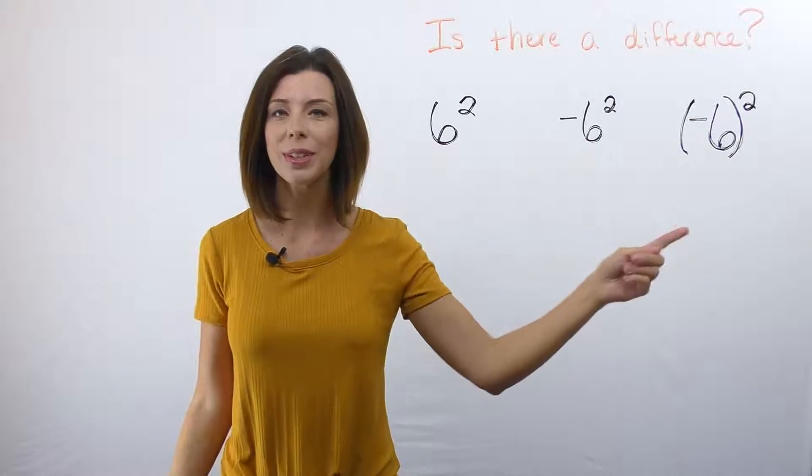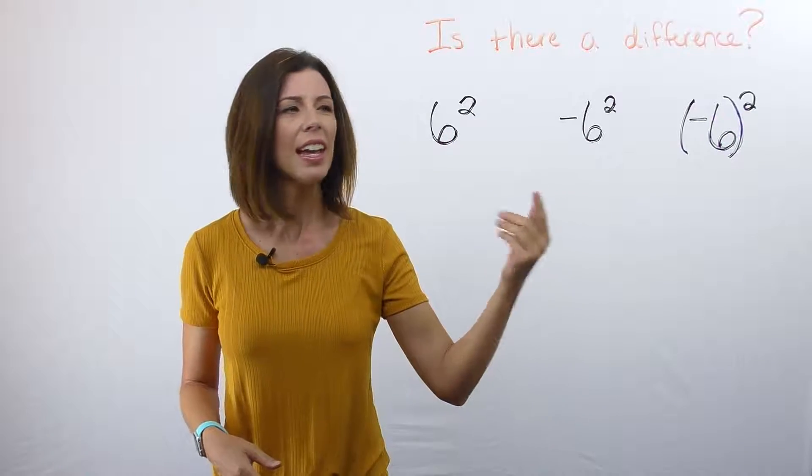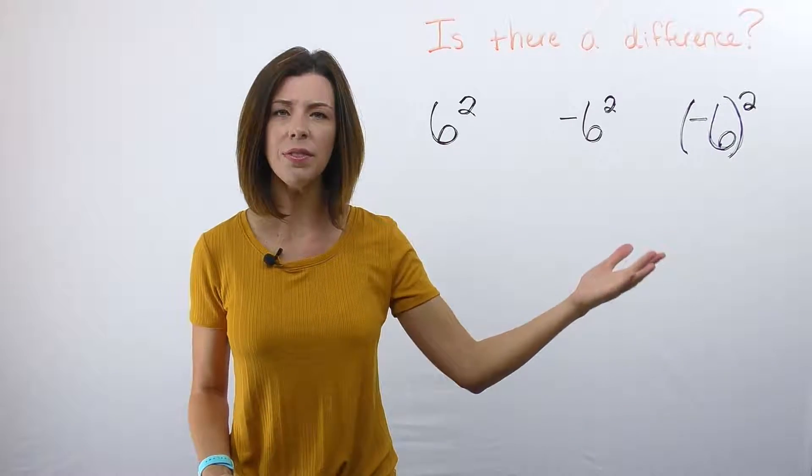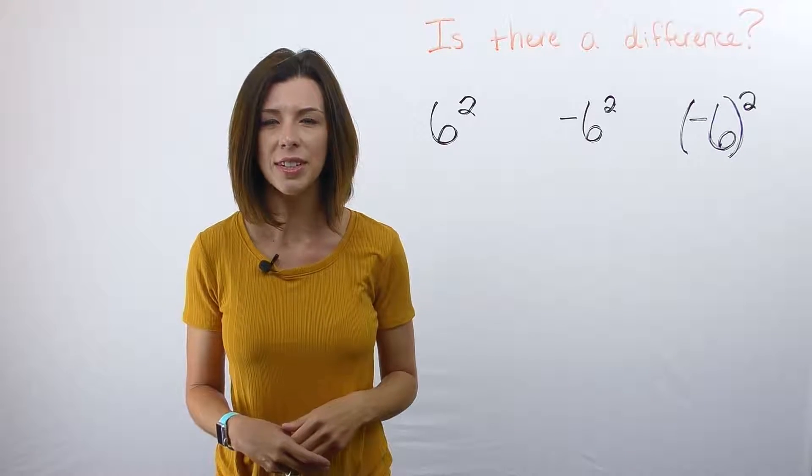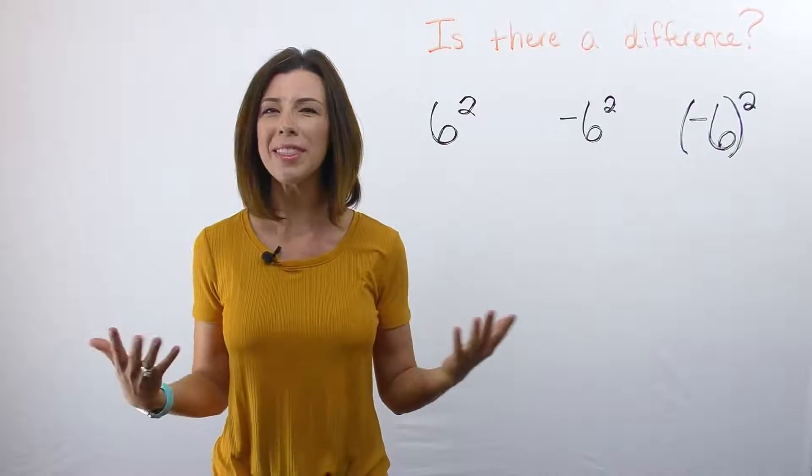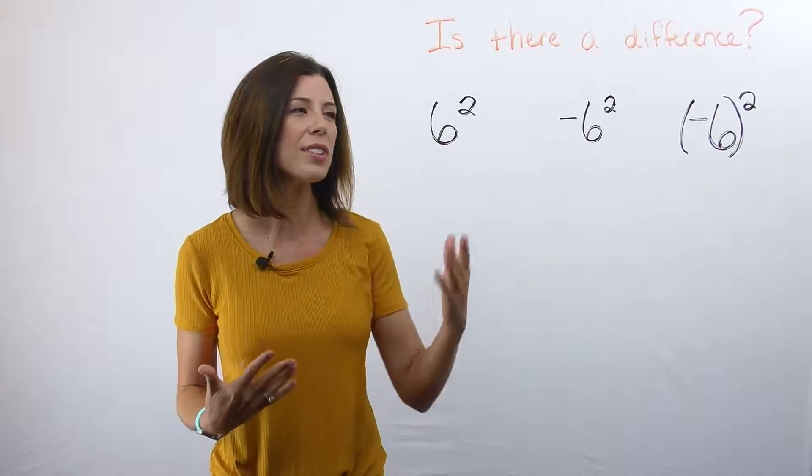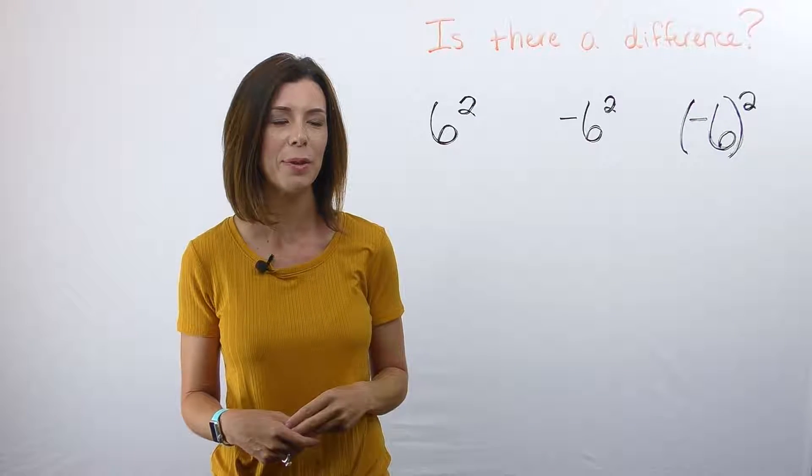Let's take a look at the following three scenarios. My question to you is, is there a difference? In other words, are all of these just 36? Are some of them negative 36? How do we know how to figure that out? Where do the parentheses come into place? All of these are great questions and I'm going to dissect these three scenarios for you.